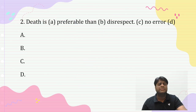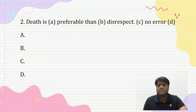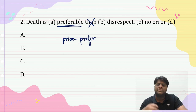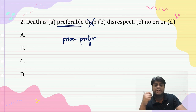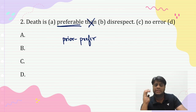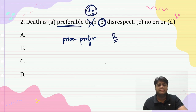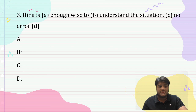'Death is preferable than disrespect.' Students, note down these 12 words: prior, prefer, major, minor, senior, junior, interior, exterior, inferior, superior, anterior, posterior. After these 12 words, you will not use 'than' — you will use 'to'. So the answer is clearly B part — 'preferable to', not 'preferable than'.